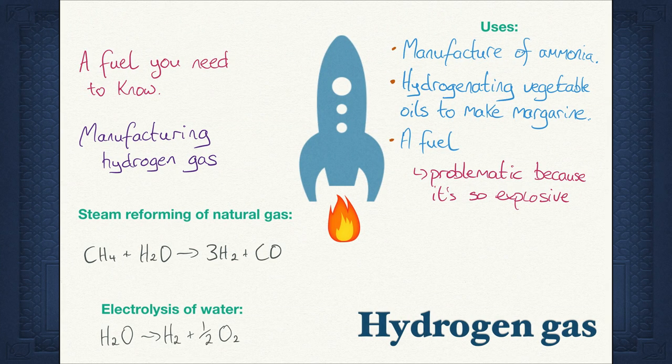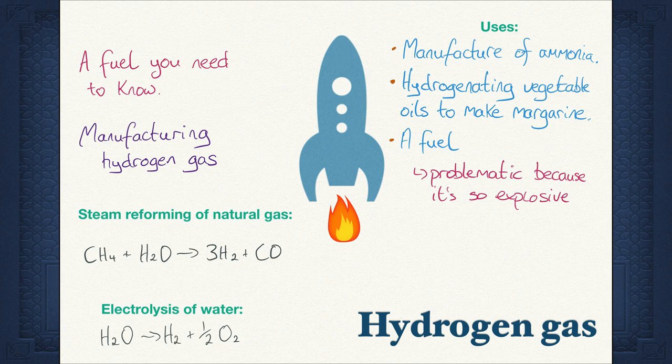Hydrogen is the only other fuel that you need to know about. It is quite a clean fuel and very efficient. Steam reforming of methane with a catalyst manufactures hydrogen gas on a large scale. Breaking down methane is good because methane contributes to global warming. However, the by-product carbon monoxide is dangerous. Electrolysis of water is another method of producing hydrogen gas, however this method is very expensive. It is important when describing the product to say hydrogen gas and not hydrogen — it is a molecule we are forming, not the element. Hydrogen gas is easy to transport because of its low molecular mass and it has a very high octane number. However, it is often too explosive to use as a fuel.